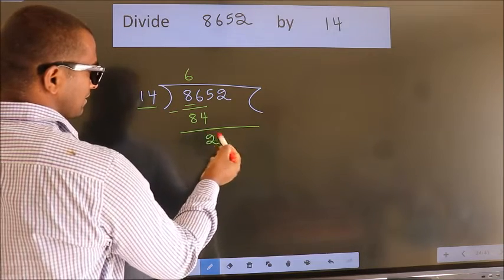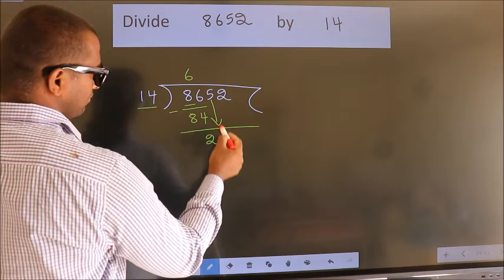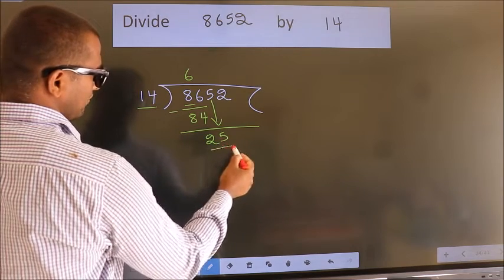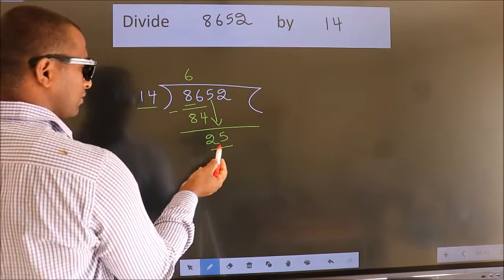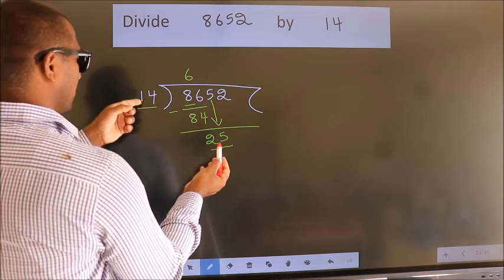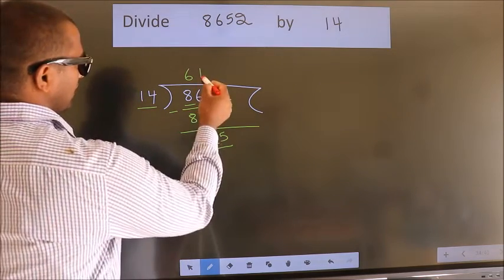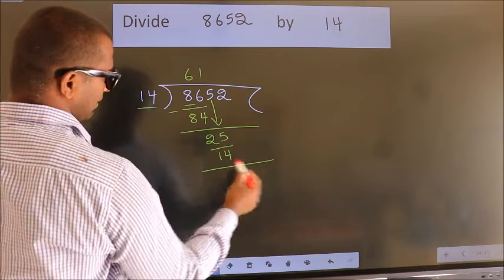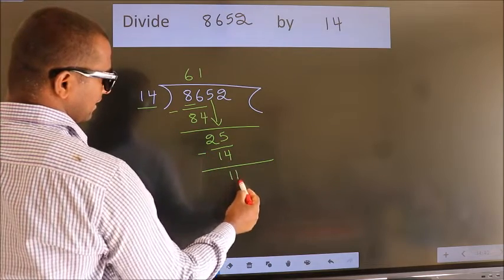After this, bring down the beside number. So, 5 down. So, 25. A number close to 25 in 14 table is 14 once 14. Now, we subtract. We get 11.